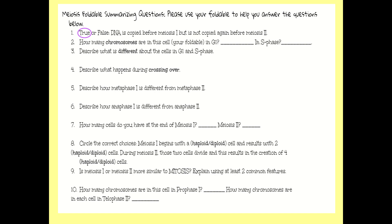Question 2 asked how many chromosomes are in this cell — meaning the one in your foldable — in G1 and S phase. In G1 you should see four chromosomes; they're unduplicated at that point. In S phase you still have four chromosomes, but notice they're in the X shape, so their DNA has been duplicated. That's what's different: in G1 the chromosomes are unduplicated, but in S phase they're now duplicated.